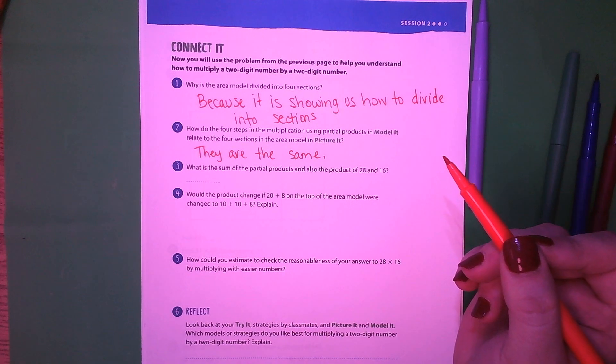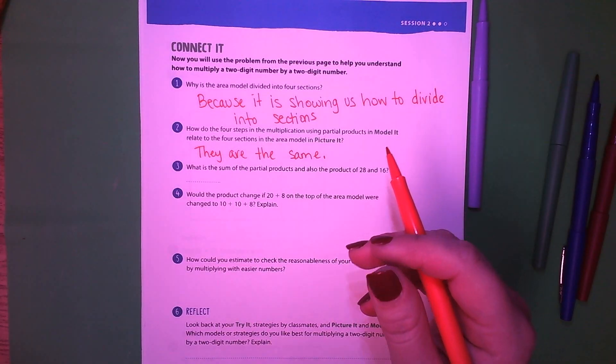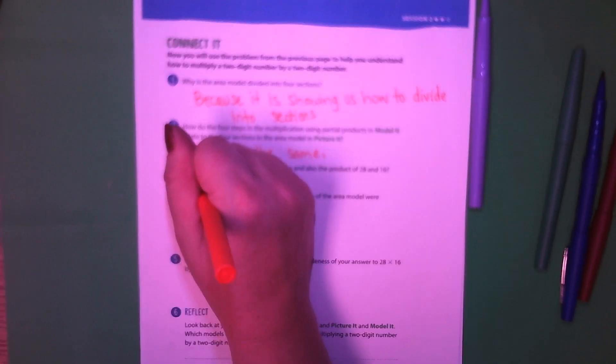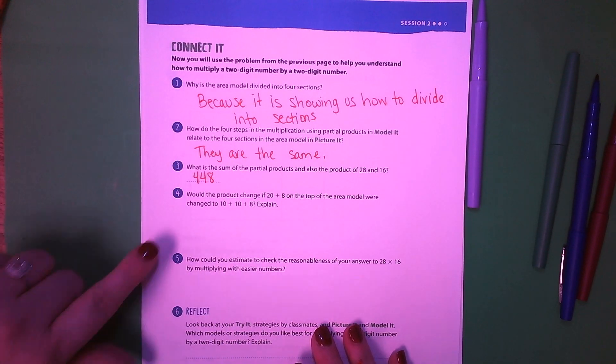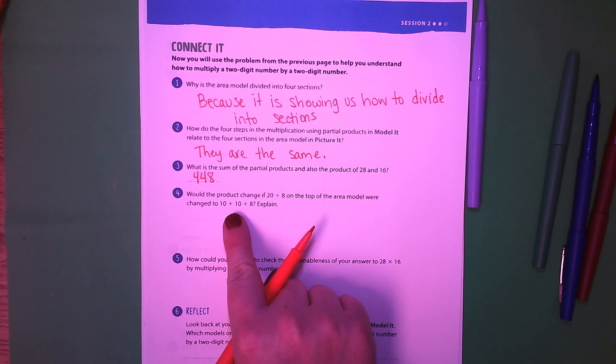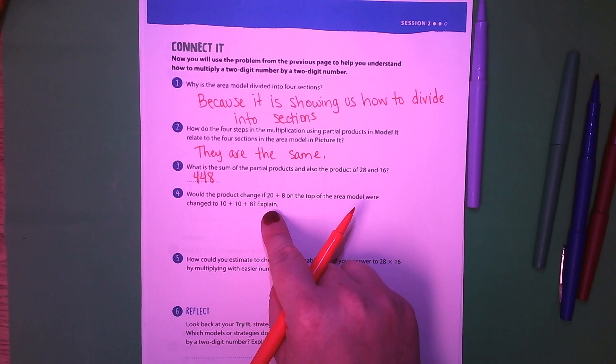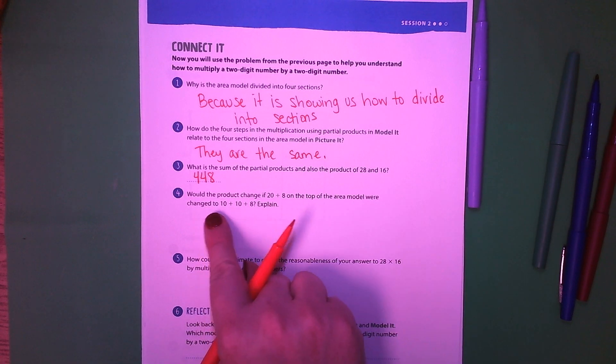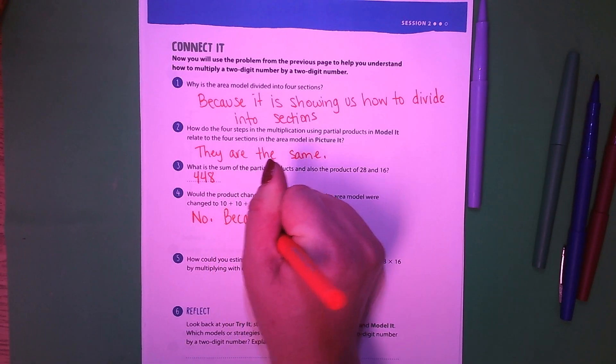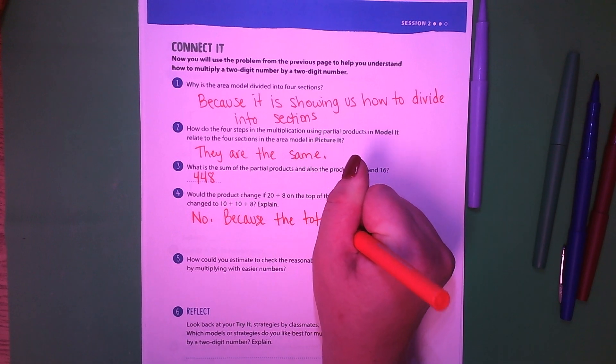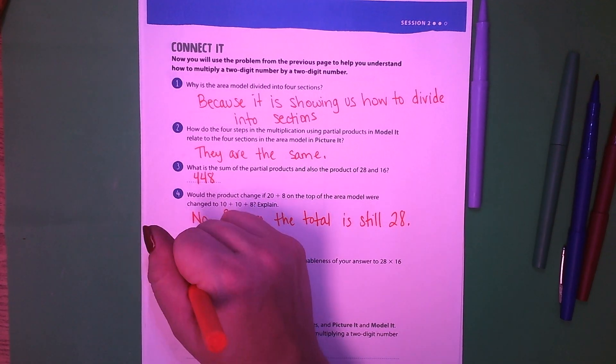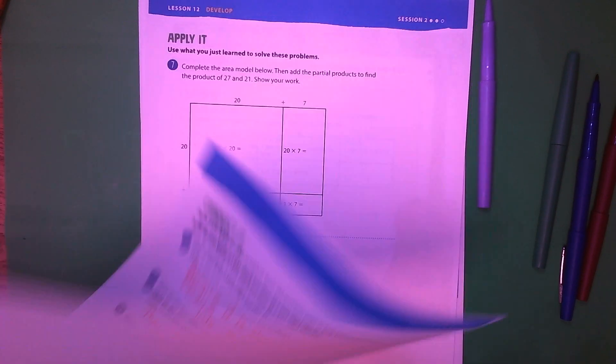So they are the same. Next, what is the sum of the partial products and also the product of 28 times 16? Well, we already found that on our first page. We found it's 448 chairs. Would the product change if 20 plus 8 was on the top and 10 plus 10 plus 8 were on the side? Oh, if 20 on the top were changed to 10 plus 10 plus 8? No. Because the total is still 28. And you don't have to do 5 or 6.